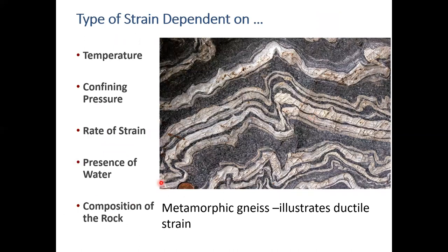This gneiss rock illustrates ductile strain — compressional forces caused the mineral veins to fold. The type of strain that results depends on the temperature of the rock, confining pressure, rate of strain — sudden stressing usually causes breakage — presence of water, and the composition of the rock.